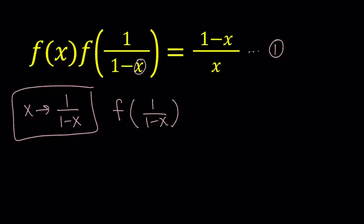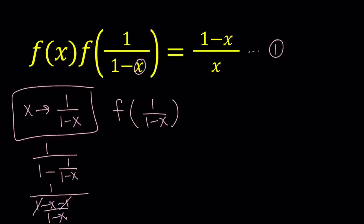Let's find out what happens when I do that. So if I replace x with 1 over 1 minus x inside 1 over 1 minus x — kind of like composing a function with itself — it's going to give me 1 over 1 minus 1 over 1 minus x. If you make a common denominator, you get 1 over (1 minus x minus 1) over (1 minus x). The ones cancel out, giving negative x over 1 minus x.